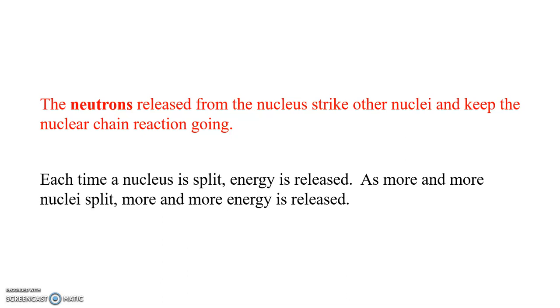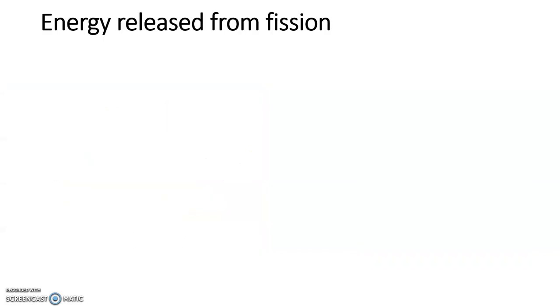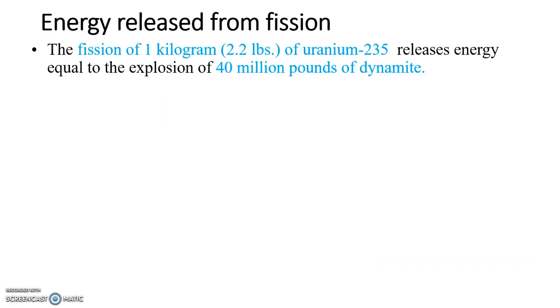You can either release that energy really rapidly like with an atomic bomb, or you can release it in a more controlled fashion like with a nuclear power plant. So you basically have two different ways this energy can be used - in a peaceful way like with a nuclear power plant, and not nearly so peaceful way like with an atomic bomb. We'll talk about both, although we'll probably spend a little more time on nuclear power plants just because they're inherently more complex.